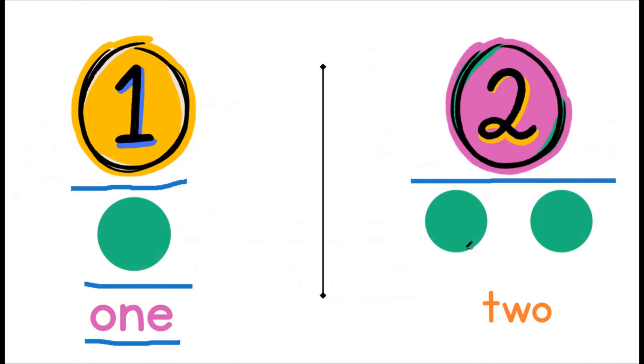Two. This is the number two. Here are two dots. T-W-O spells two.